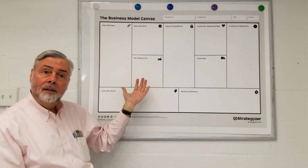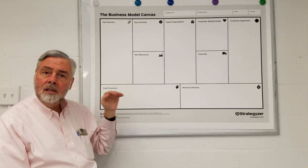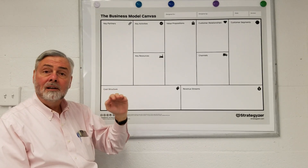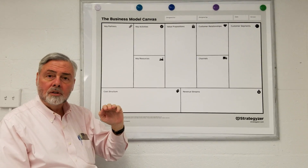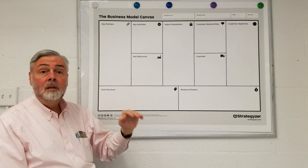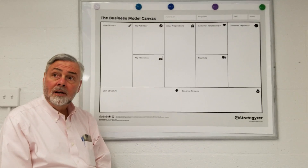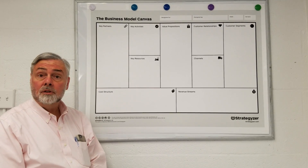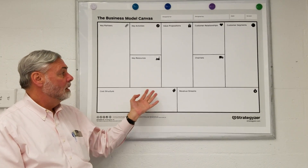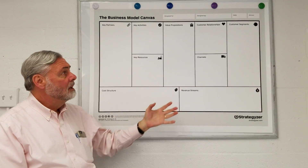The left side of the canvas leads to the cost elements — what are the key cost elements, three to five things, that are going to use up most of your costs? Typically it will be people, might be facilities, might be licensing. Some ventures have complex regulatory issues, so legal costs may also fall into this category.